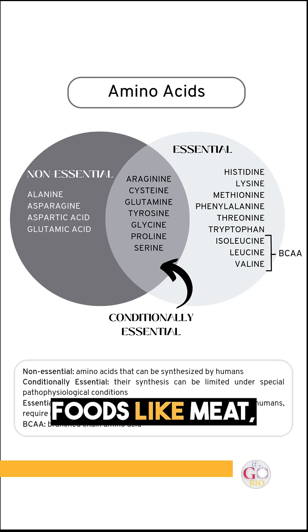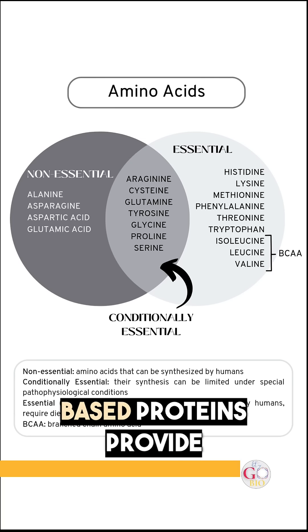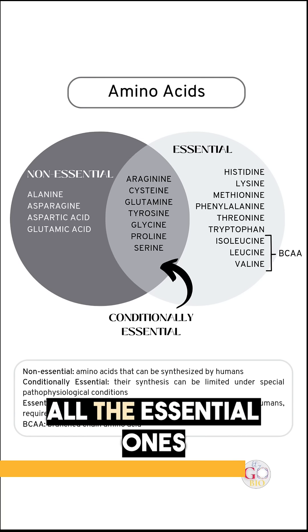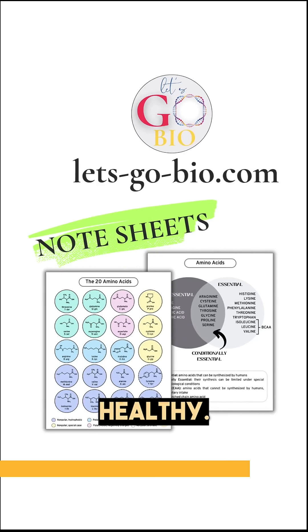Foods like meat, eggs, dairy, and some plant-based proteins provide all the essential amino acids that we need to stay healthy.